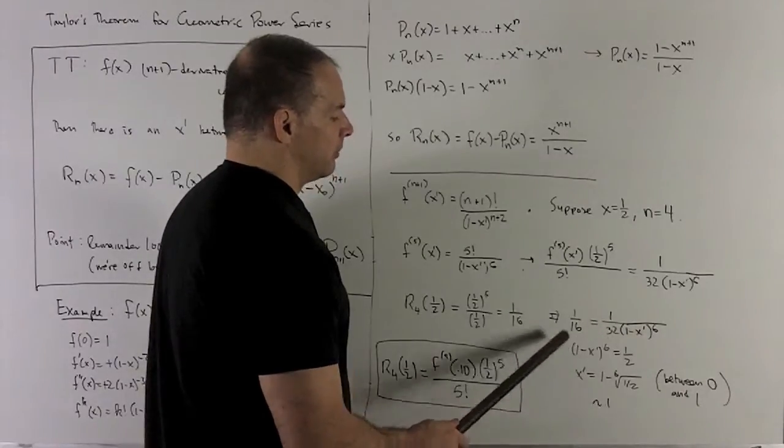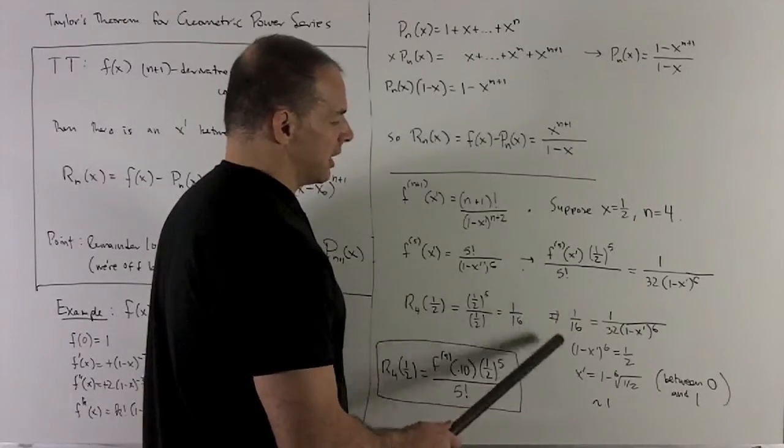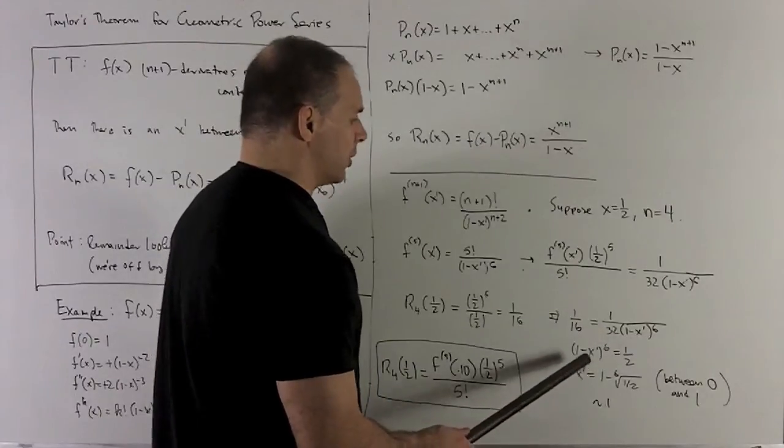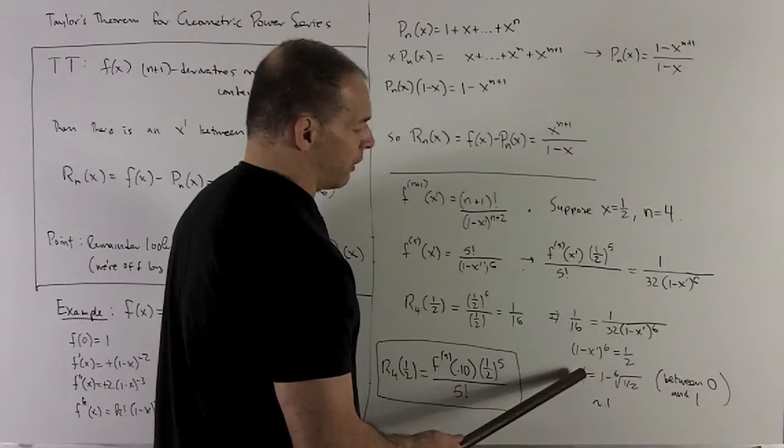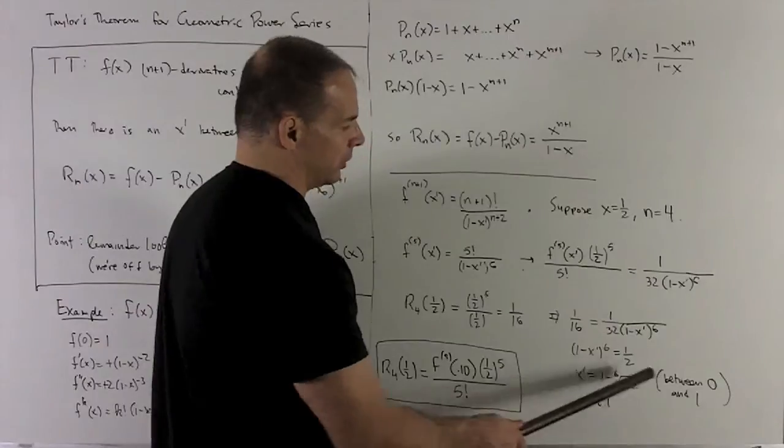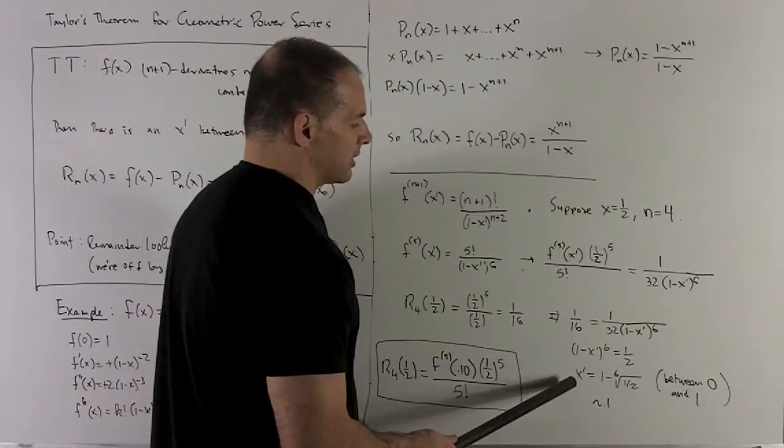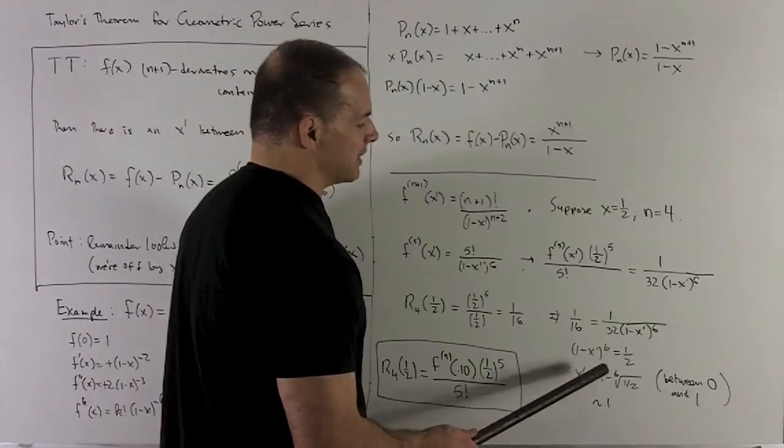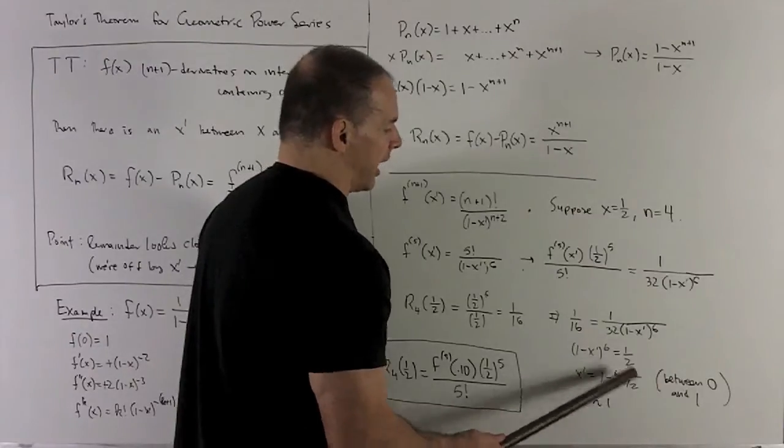And then when I clean that up, so what I'll do is I'll take the sixth, 1 over 6th exponent of each side, and that's going to be when I push the 1 over and the x prime over. We do that all in one step, it's going to give me x prime is equal to 1 minus the sixth root of 1 half.